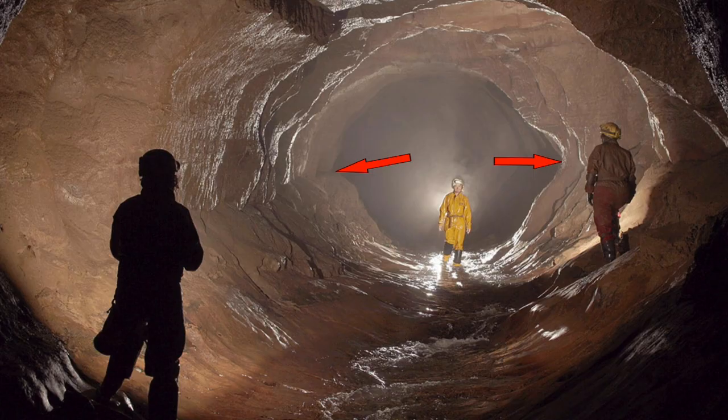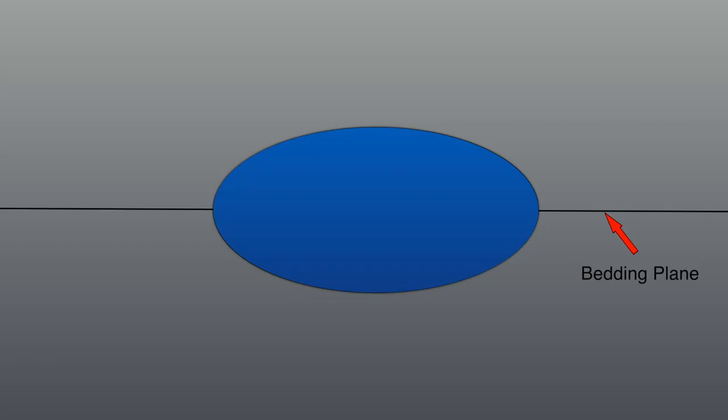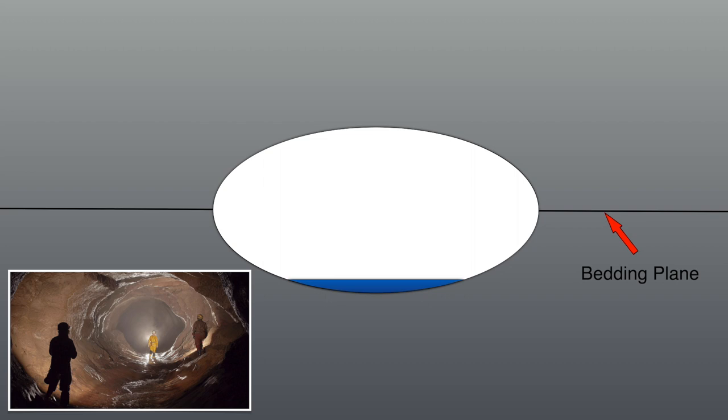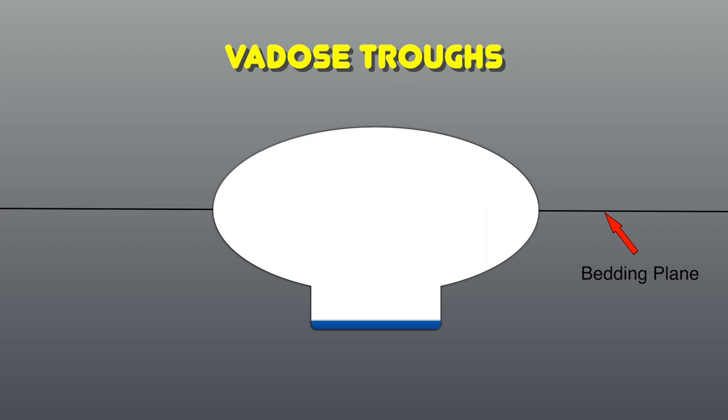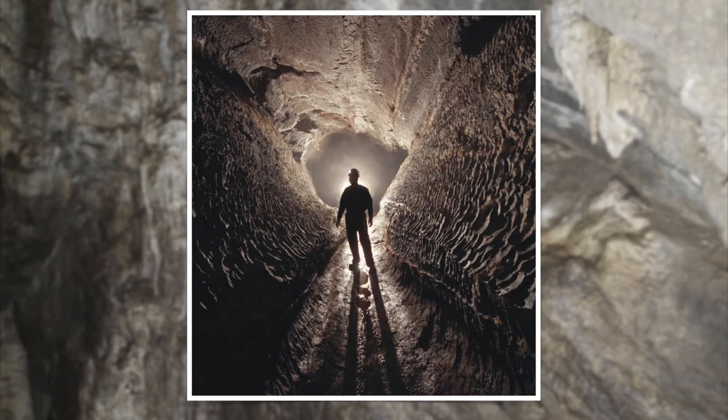When water levels fall and the passage is no longer completely filled, the stream is left flowing along the floor, just like in the main stream passage in Peak Cavern. The acid water can now only erode the floor, and it carves a trough in the bottom of the phreatic tube. This is called the vadose stage of cave development. Here is an example of a vadose trough. Can you see the original phreatic tube and the bedding plane around which the tube developed?